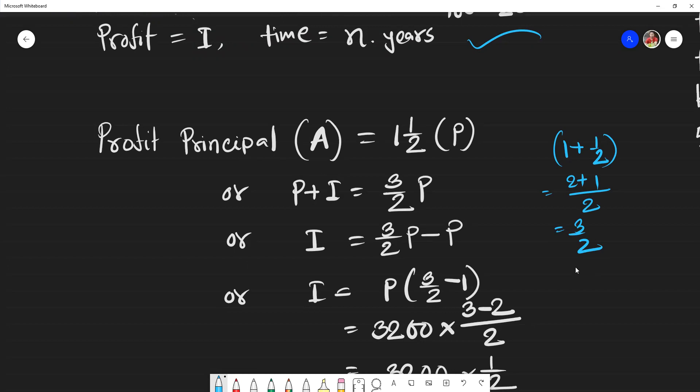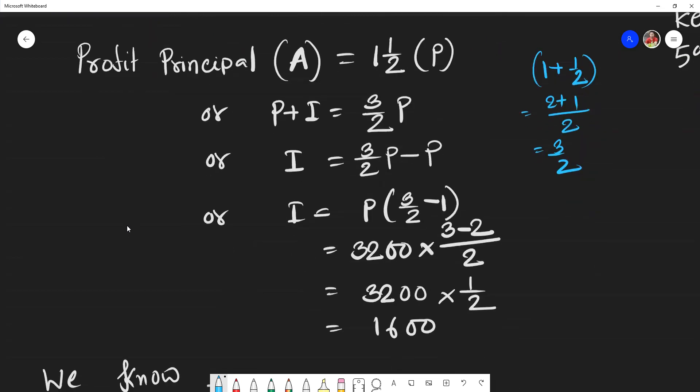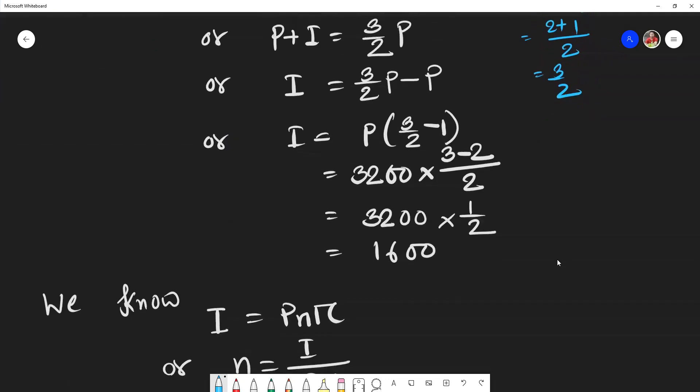The profit-principal formula is profit plus principal. Taking p common and doing the LCM, we will get after calculation that the profit or interest is 1,600 taka.